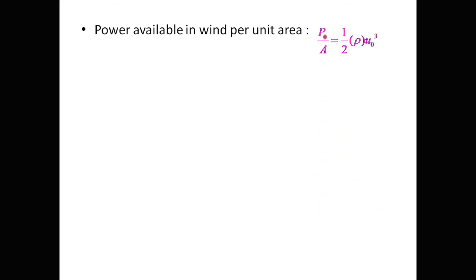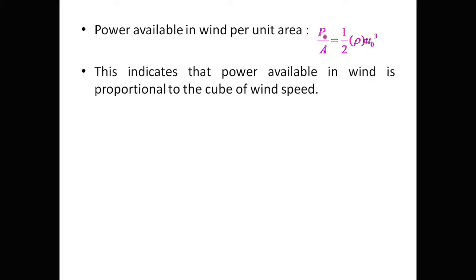The power available in the wind per unit area is P₀/A = ½·ρ·u₀³. We can conclude that power per unit area is directly proportional to u₀³. This is a very important relation: the power available in the wind is proportional to the cube of the wind speed.